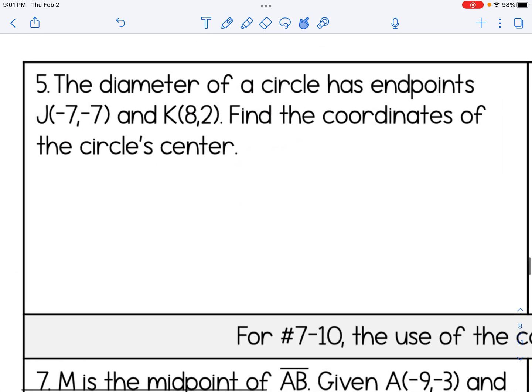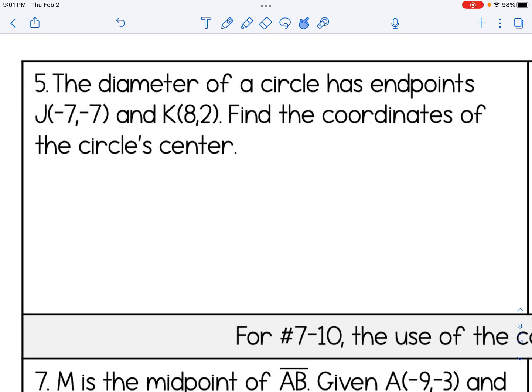If we take a look at number 5, at first glance it looks very different from the first four problems. It says the diameter of a circle has endpoints (-7, -7) and (8, 2). Find the coordinates of the circle's center. Well, if we think about the center of a circle and the diameter of a circle, the center is really just the midpoint of the diameter. So even though this question looks different, we're going to do the same process that we've been doing. We are going to add the x's, divide by 2, add the y's, divide by 2. So that gives me 1/2 and -5 over 2.